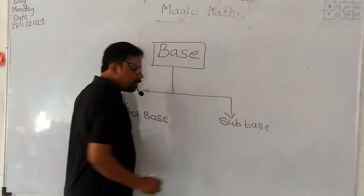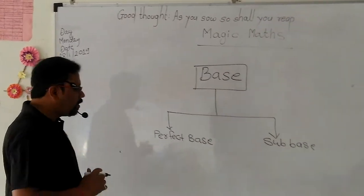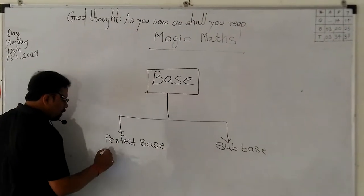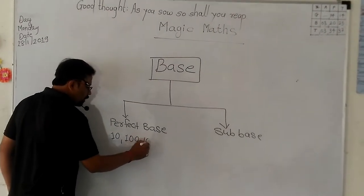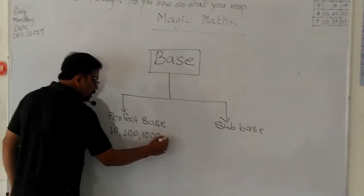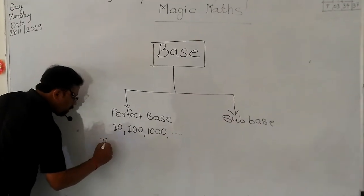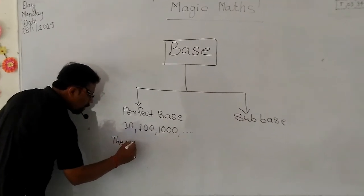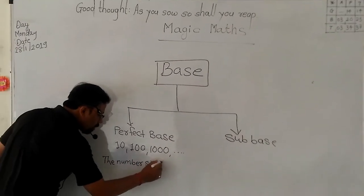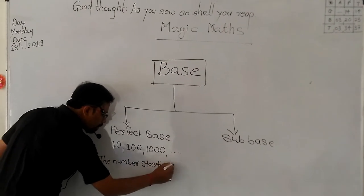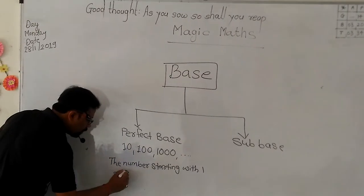Now, what is meant by PERFECT BASE? PERFECT BASE means numbers starting with one and followed by zeros — like 10, 100, 1000, and so on.